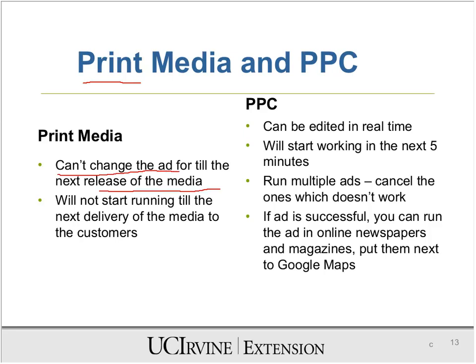For a monthly magazine, you have to wait a month; for a weekly magazine, a week. For yellow pages, you may have to wait three or six months, and it won't start running until the next delivery of the media to the customer. So if you want to advertise in yellow pages distributed every three to six months, your customers won't see those things right away.